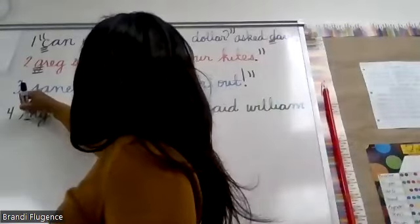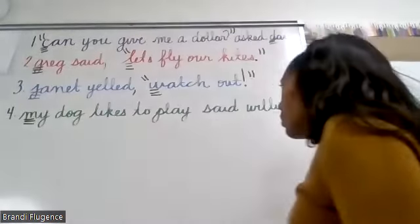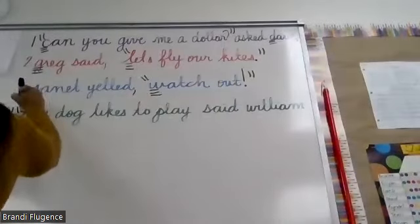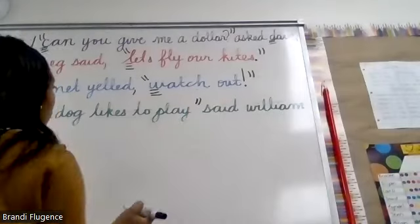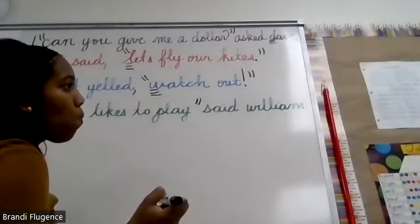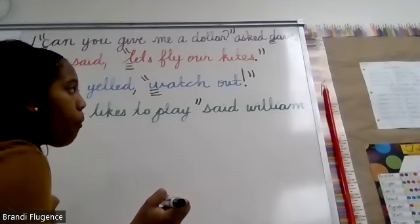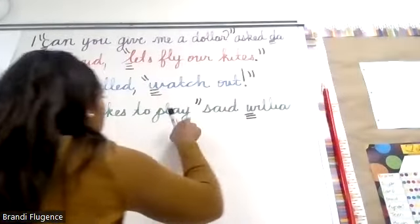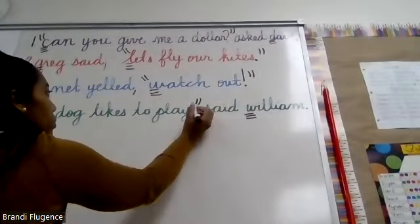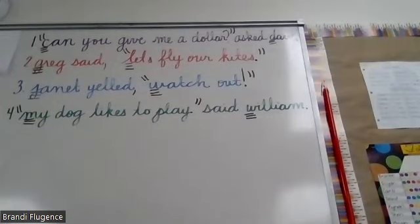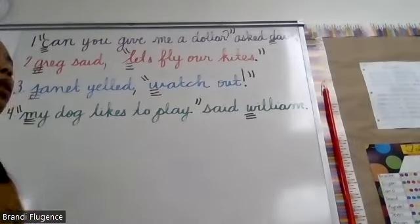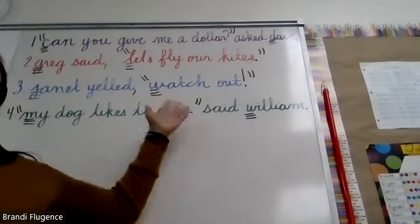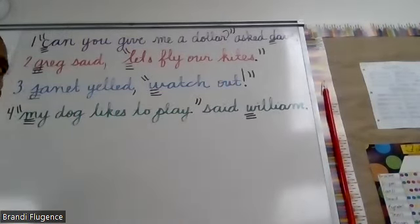Number four: 'My dog likes to play,' said William. Capitalize the first letter M, put quotation marks on 'My' and finish where — on 'play.' What's my punctuation here? 'My dog likes to play.' So that's how we do it. Tomorrow is our last day to practice before the test on Thursday. If you have anything that you did incorrectly, this was your time to fix it and look at how we corrected it so that you're prepared for the test on Thursday.